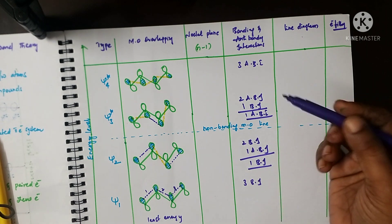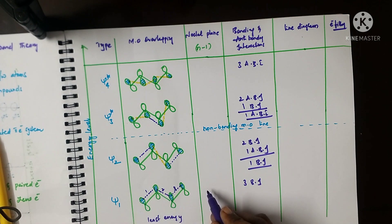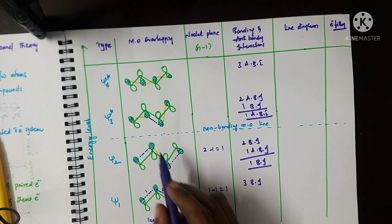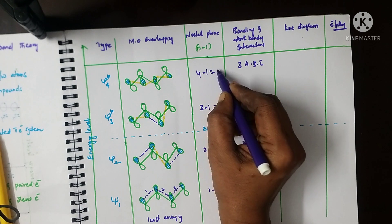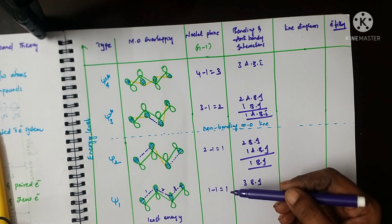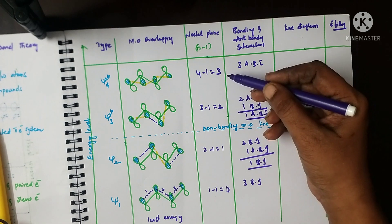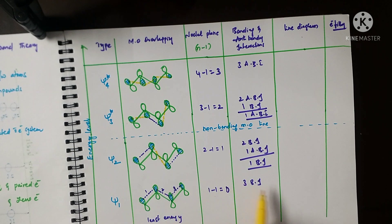Now let's check the number of nodal planes. The number of nodal planes is determined by the formula n minus 1. For psi 1: 1 minus 1 equals 0. For psi 2: 2 minus 1 equals 1. For psi 3 star: 3 minus 1 equals 2. For psi 4 star: 4 minus 1 equals 3. Nodal planes occur between anti-bonding interactions. Psi 1 has no anti-bonding interactions, so its nodal plane count is zero.